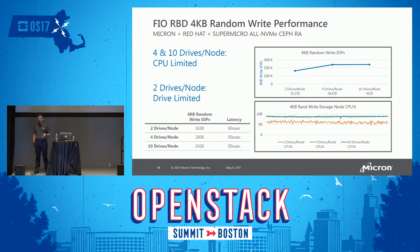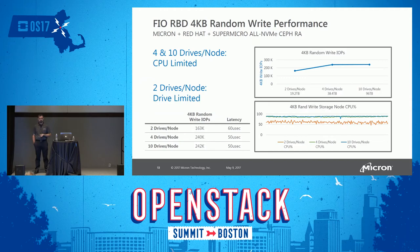For 4K random writes, the story is similar: 2 drives to 4 drives scales up, but from 4 drives to 10 drives you effectively flatline — you're using all your CPU. With 2 drives per storage node it's more drastically drive-limited: the CPU utilization graph shows it running well under 90%, while the other two configurations are flatlined at the top. This shows that with Red Hat Ceph 2.1 and 4K random workloads, you can really hammer these CPUs.